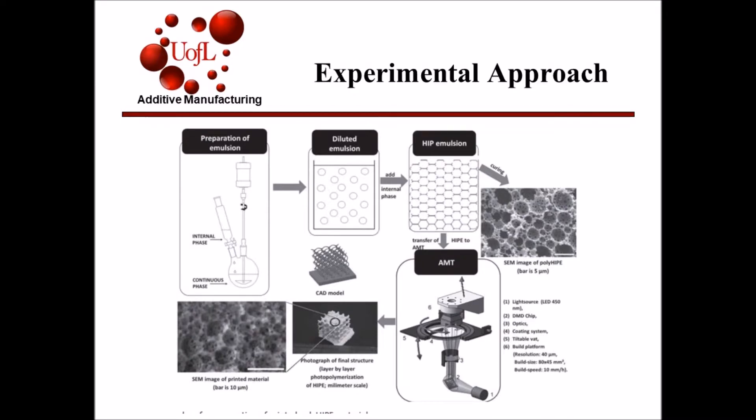This slide shows a diagram of the combination of emulsion templating and SL printing. A diluted emulsion is prepared on the top left by mixing an internal phase into a continuous external phase — TMPTA in this research. The emulsion is then transferred to an SL printer. An LED light source provides energy to the emulsion and creates a layer-by-layer part with high porosity. Post-manufacturing cleaning of the part is usually conducted but not shown here in this diagram.